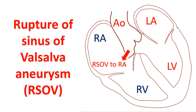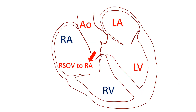About one third of aneurysms rupture and produce acute symptoms in a quarter of patients. Important symptoms following rupture are dyspnea, chest pain, and fatigue. If it ruptures into the right-sided chambers, it produces a left-to-right shunt. The severity of the shunt and associated lesions determine the severity of symptoms. Rupture of Sinus of Valsalva aneurysm usually occurs into the right heart chambers.